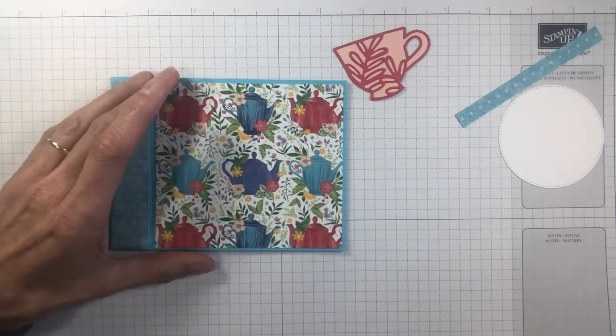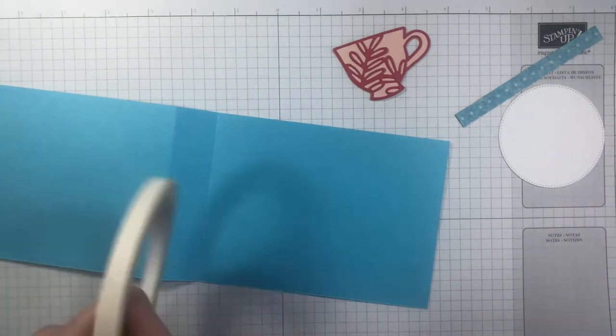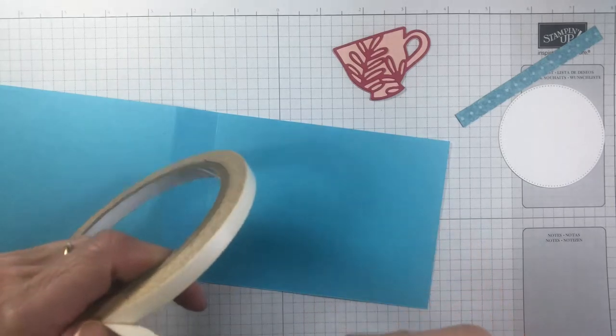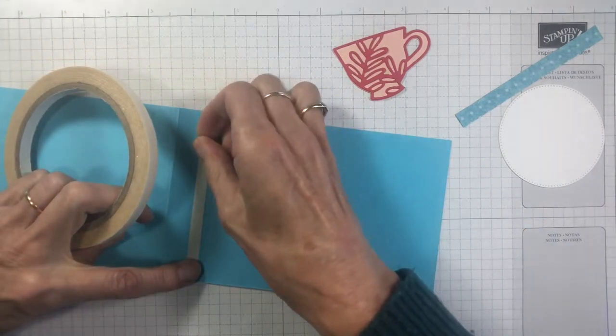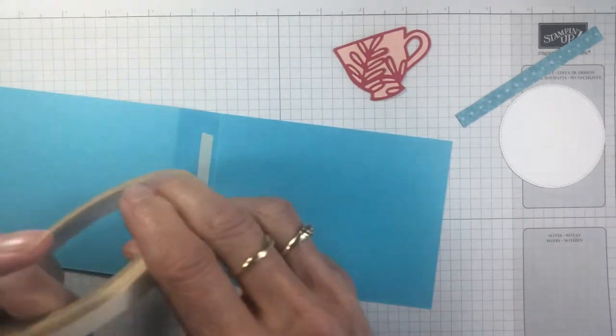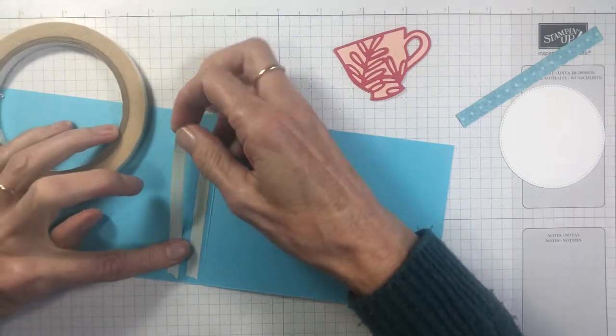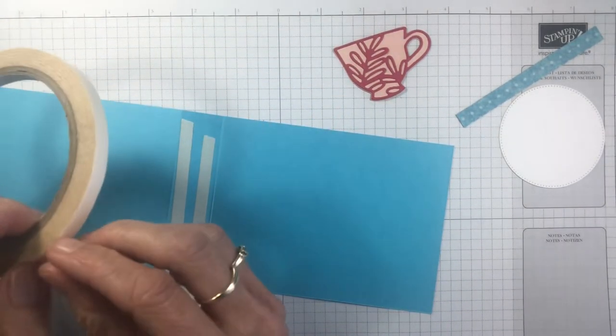Now that's there, we'll let that dry. We'll just adhere these pieces inside together. You'll need some stronger tape. I'm using tear and tape. You might use seal. You can use the multi-purpose Tombow glue, but you'll just have to hold it a little longer to make sure it sticks.